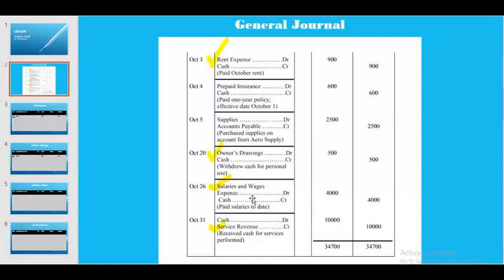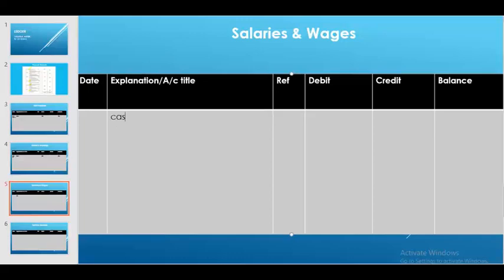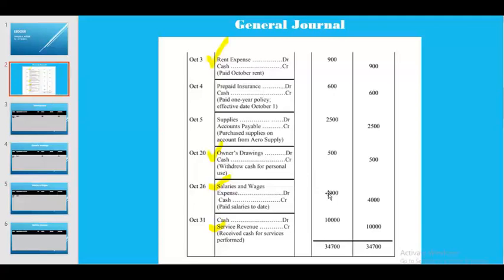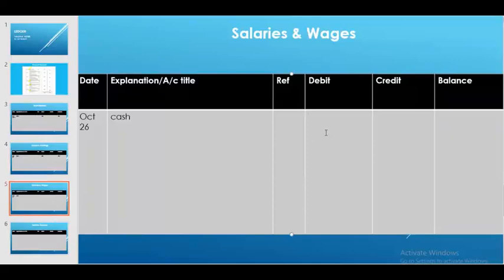There is no other owner's drawing entry. Next is salaries and wages expense, which occurred on October 26 — in opposition to cash. We write cash as the account title and the date October 26. The amount is on the debit side — 4,000 taka — so we write 4,000 on the debit side and the balance is also 4,000.